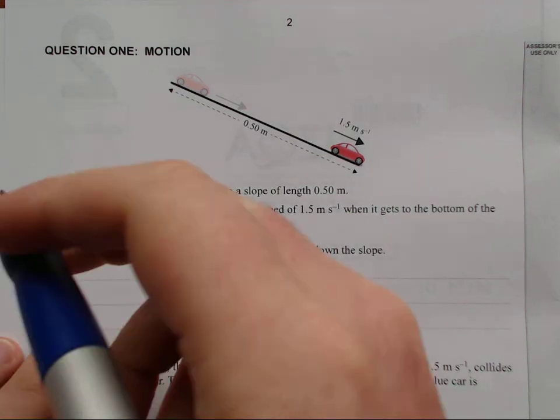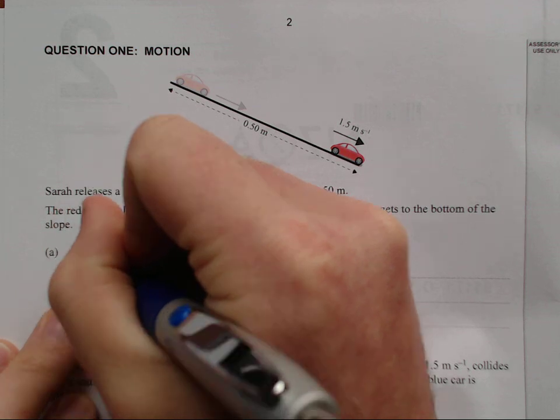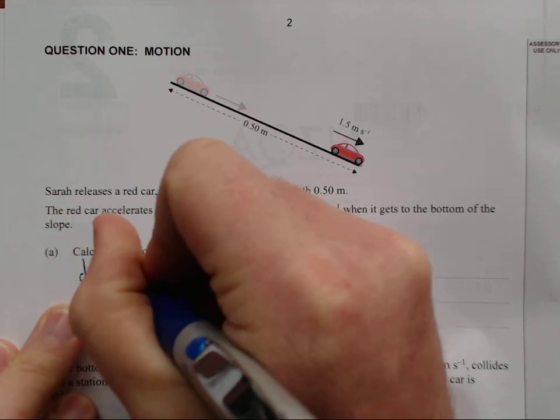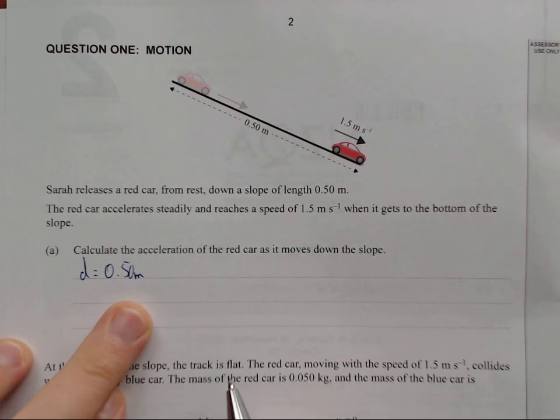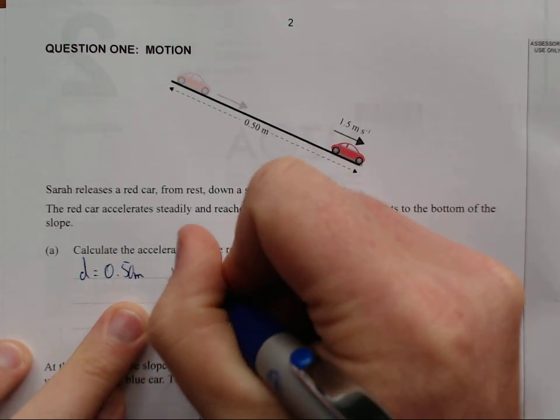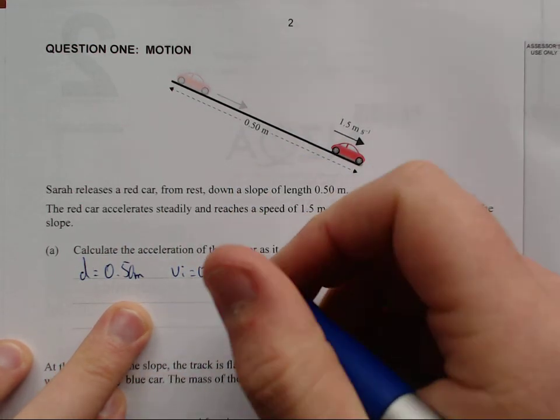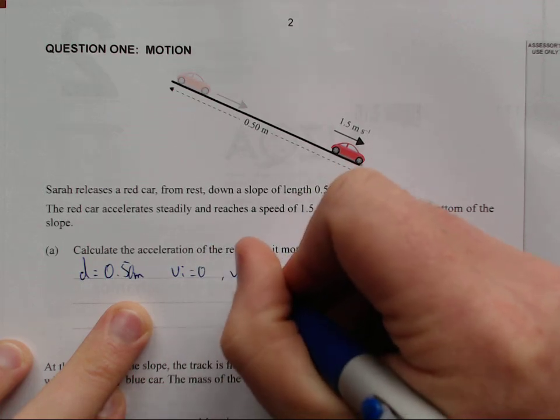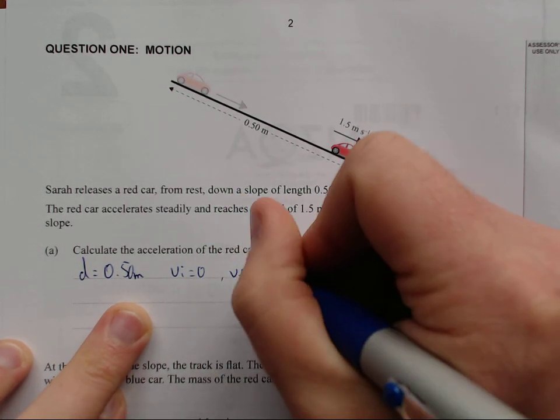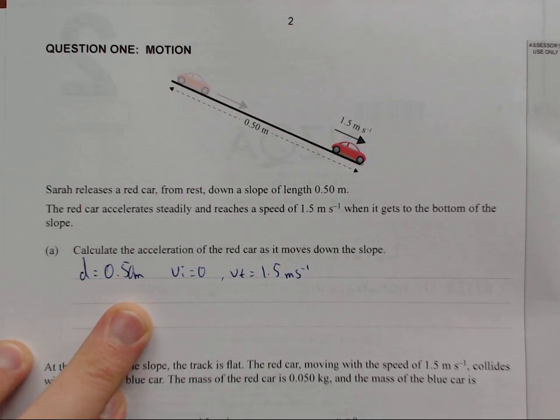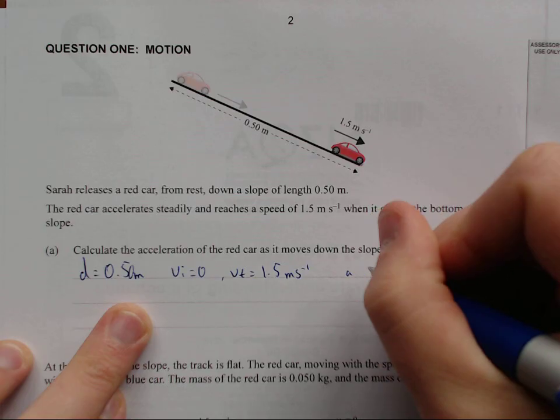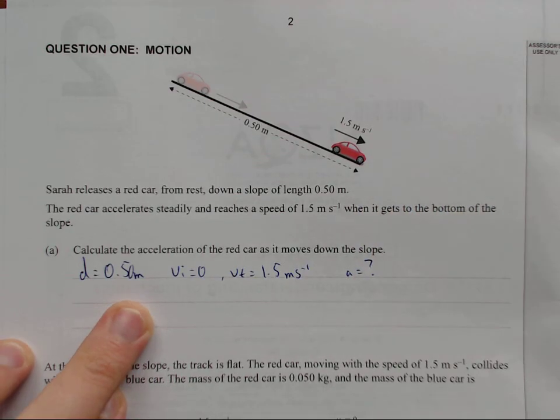So before we even start, let's write off what we've got. We've got a distance equal to 0.5 meters. The initial velocity is equal to 0 meters per second. Final velocity VF is equal to 1.5 meters per second and we're trying to find the acceleration.